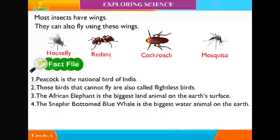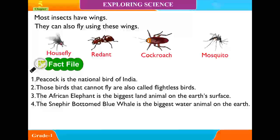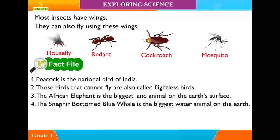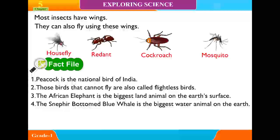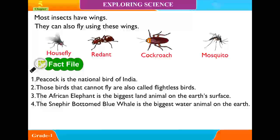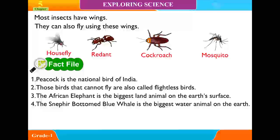Fact File: 1. Peacock is the national bird of India. 2. Birds that cannot fly are called flightless birds. 3. The African elephant is the biggest land animal on the earth's surface. 4. The blue whale is the biggest water animal on the earth.